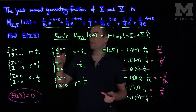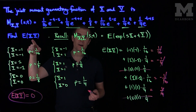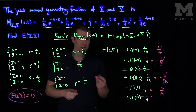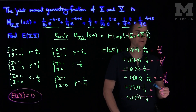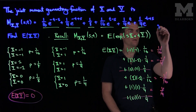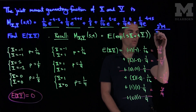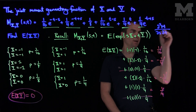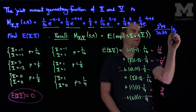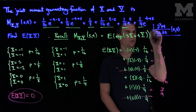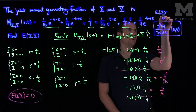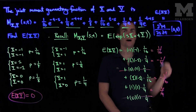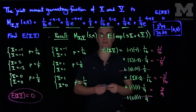We could have also found the expected value of x times y using an alternative approach: taking the partial derivative squared of the moment generating function m with respect to s and with respect to t, evaluated at (0, 0). By the definition of the moment generating function, this partial derivative would also give us the expected value of x times y. Thank you very much.